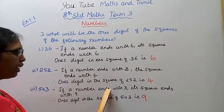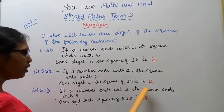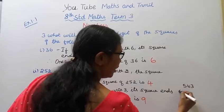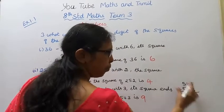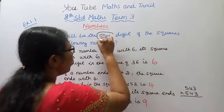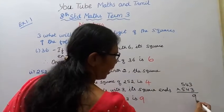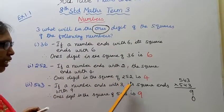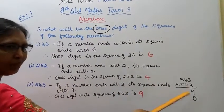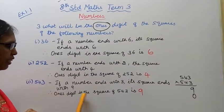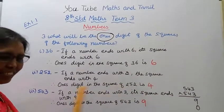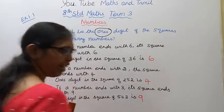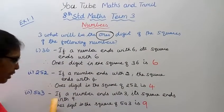For 543 - if a number ends with 3, its square ends with 9. When we multiply 543 by 543, the ones digit is 3. Three times three equals nine. If a number ends with 3, its squares end with 9. Therefore, the ones digit in the square of 543 is 9. This way, we don't need to do full multiplication - we can directly find the ones digit easily.